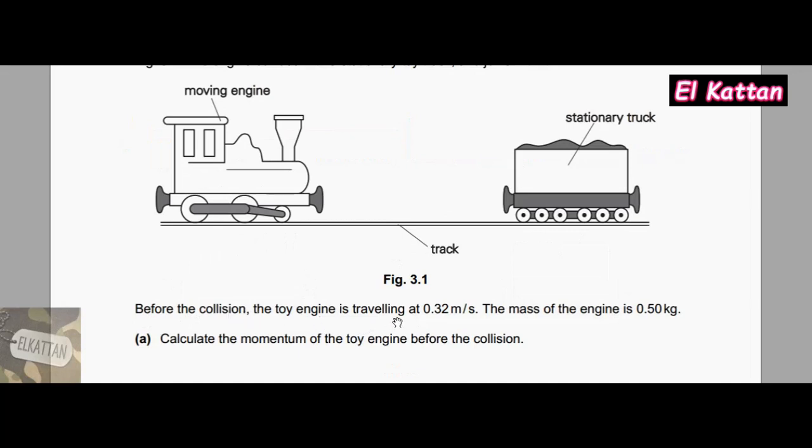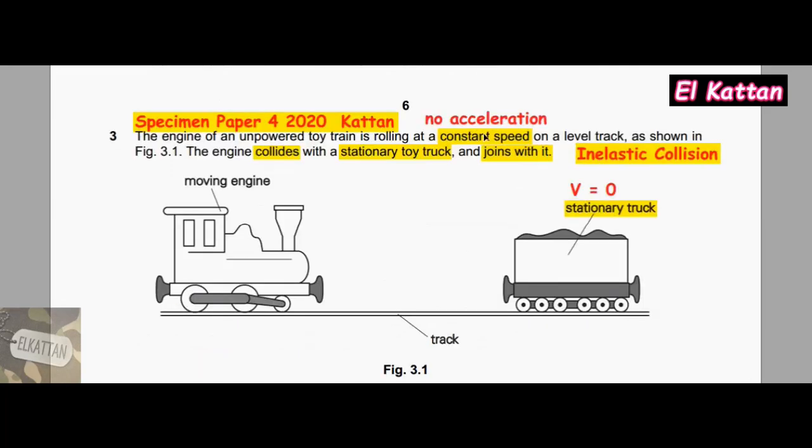Before the collision, the toy engine is travelling at 0.32 m/s and the mass of the engine is 0.50 kg. We highlight constant speed, which means there is no acceleration. The engine collides with a stationary toy truck, so initial velocity is 0, and joins with it.